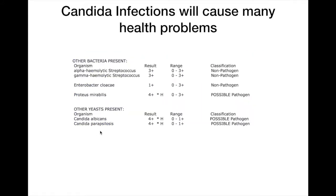Here's an example of a very high level of both candida and candida parapsilosis. There's also an infection of proteus mirabilis here, which is commonly associated with rheumatoid arthritis — and this client actually did have rheumatoid arthritis. So if we can eradicate these infections, we can make a massive difference to the rheumatoid arthritis symptoms.